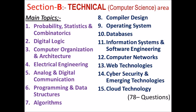Section B is also very important. There are 78 questions related to the technical section — essentially computer science and ECE questions. There are 15 main topics. The main topics include probability, statistics, and combinations.